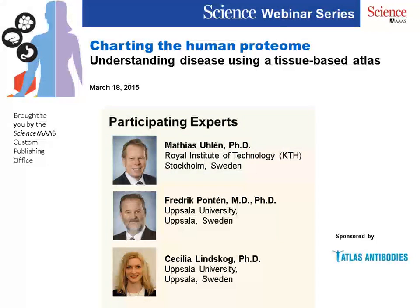It has taken a team of multidisciplinary researchers using a combination of several omics technologies over 1,000 person-years to compile a searchable open-source database comprising 13 million annotated images of human tissues mapped down to the single-cell level. The interactive database is aimed at researchers interested in basic research into human biology, as well as those working in translational medicine. In this webinar, two of the researchers involved will provide their insights regarding the lessons learned from this intensive effort to map the human proteome.